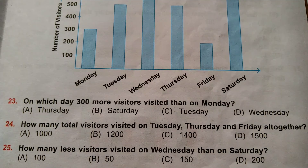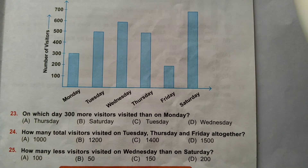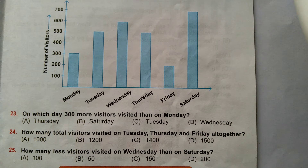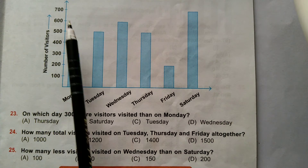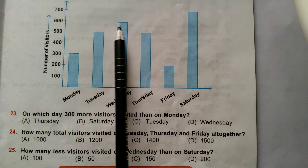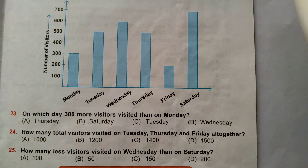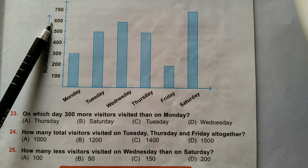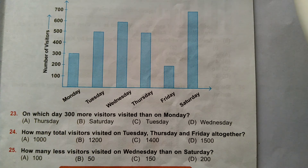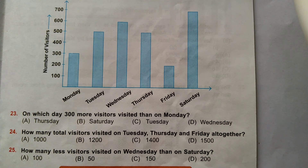Question number 25: How many less visitors visited on Wednesday than on Saturday? Number of visitors on Saturday: 700. On Wednesday: 600. The difference: 700 minus 600 equals 100. Hence, option A is correct. 100 less visitors visited on Wednesday than on Saturday.